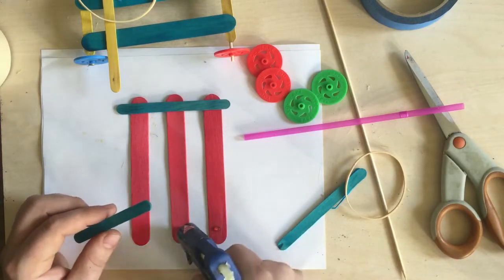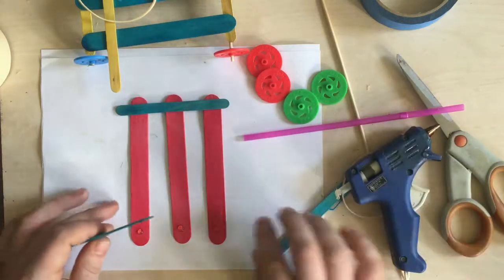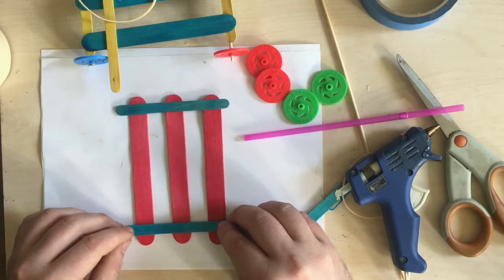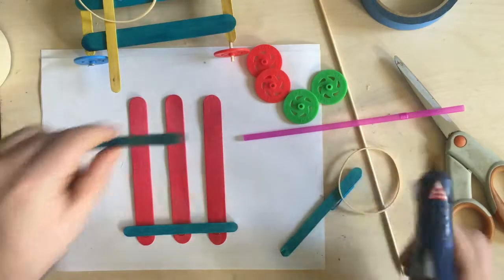But for now we're going to put three small drops of glue—one, two, three, one on each popsicle stick—and then quickly while that's still hot take my smaller popsicle stick and just lay that on there and press it down.